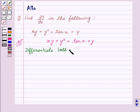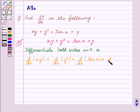So this gives us d/dx of xy plus d/dx of y squared equals d/dx of tan x plus d/dx of y.